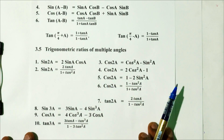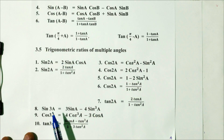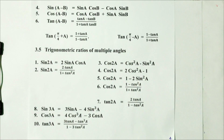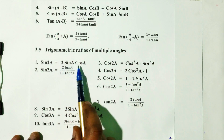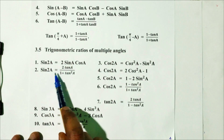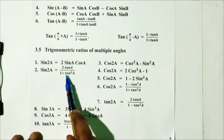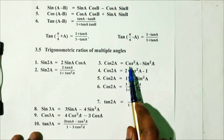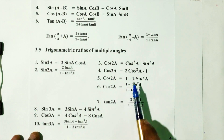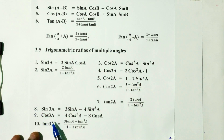Topic 3.5: Trigonometric ratios of multiple angles. sin 2A = 2 sin A cos A. sin 2A = 2 tan A / (1 + tan²A). Also note cos 2A formulas. For triple angles: sin 3A, cos 3A, and tan 3A formulas are covered here.